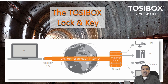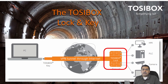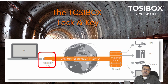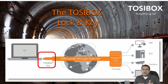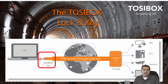TosiBox uses a lock and key concept. On the right hand side you can see the lock, and on the left hand side is the key. The key is on your end and the lock is on the remote site you're trying to access. In the middle you have a tunnel — your own personal VPN tunnel keeping you safe and secure.